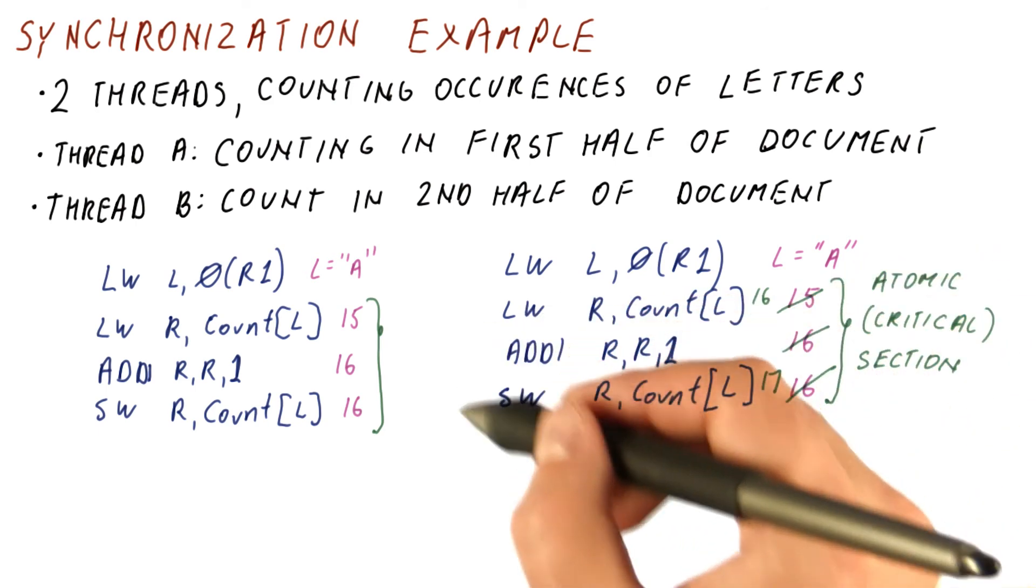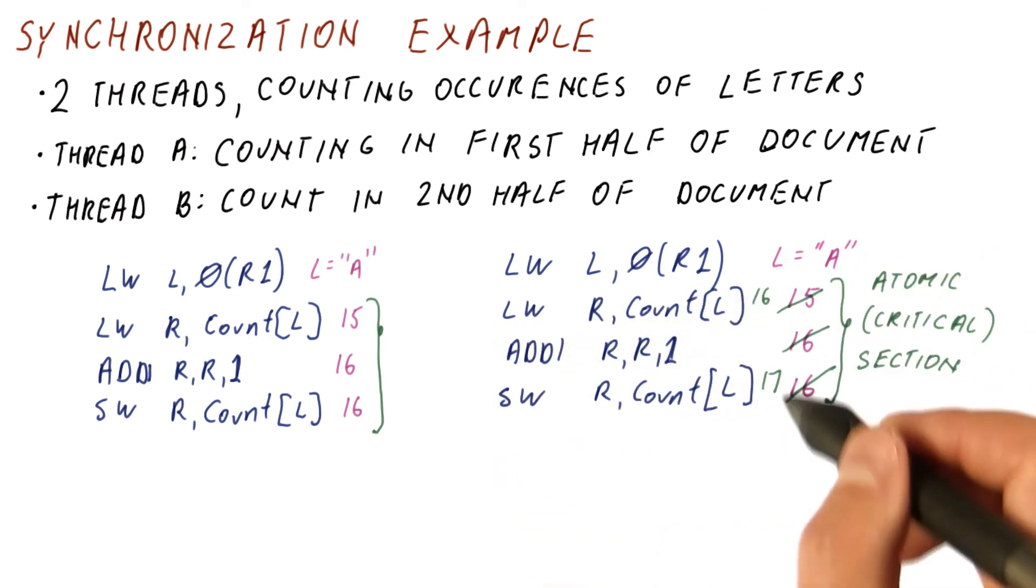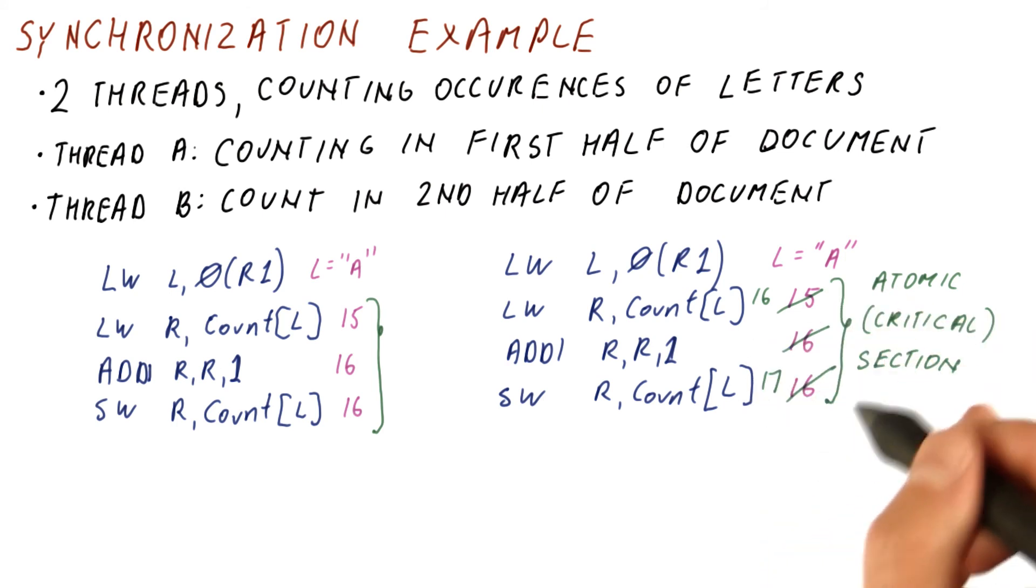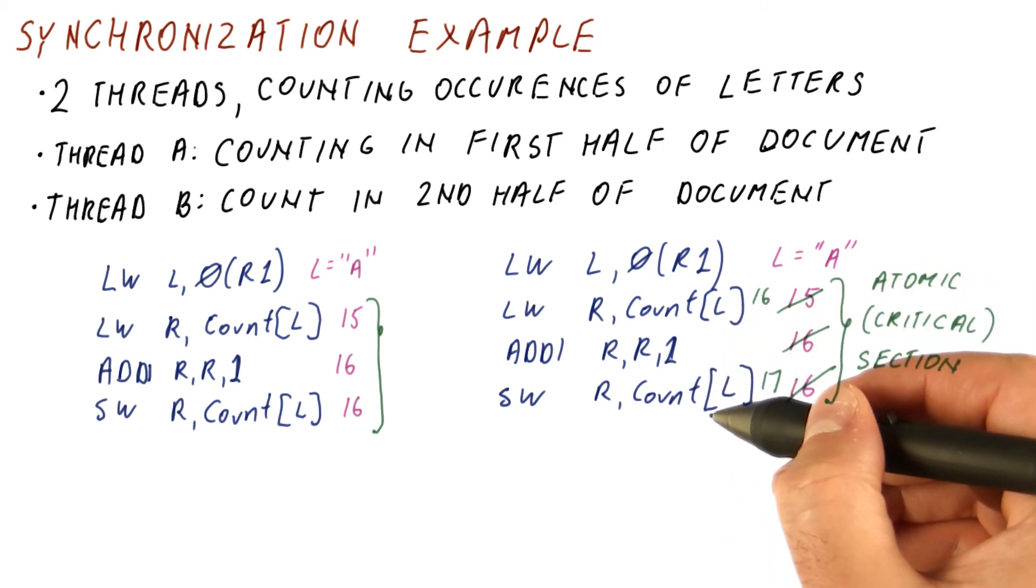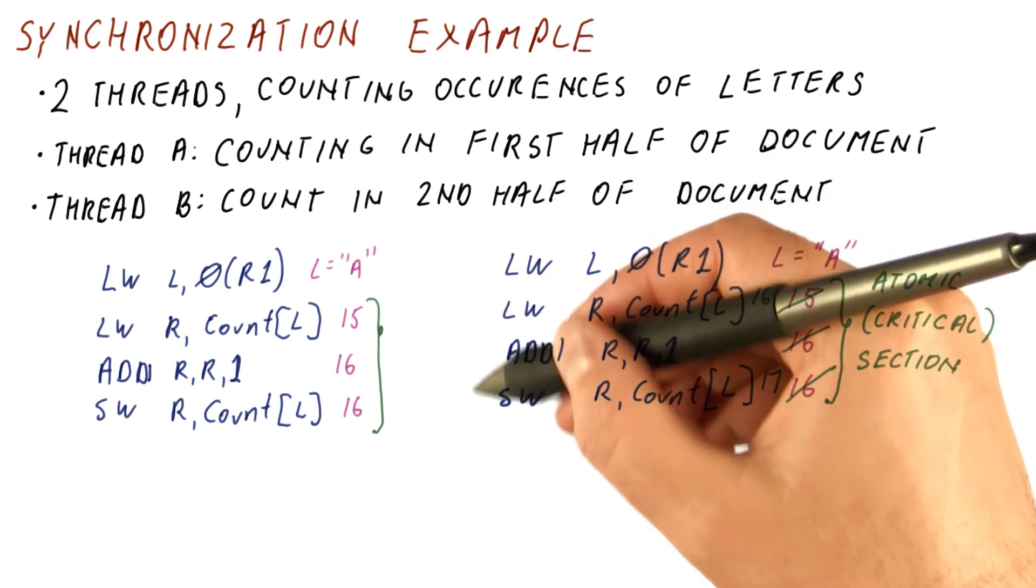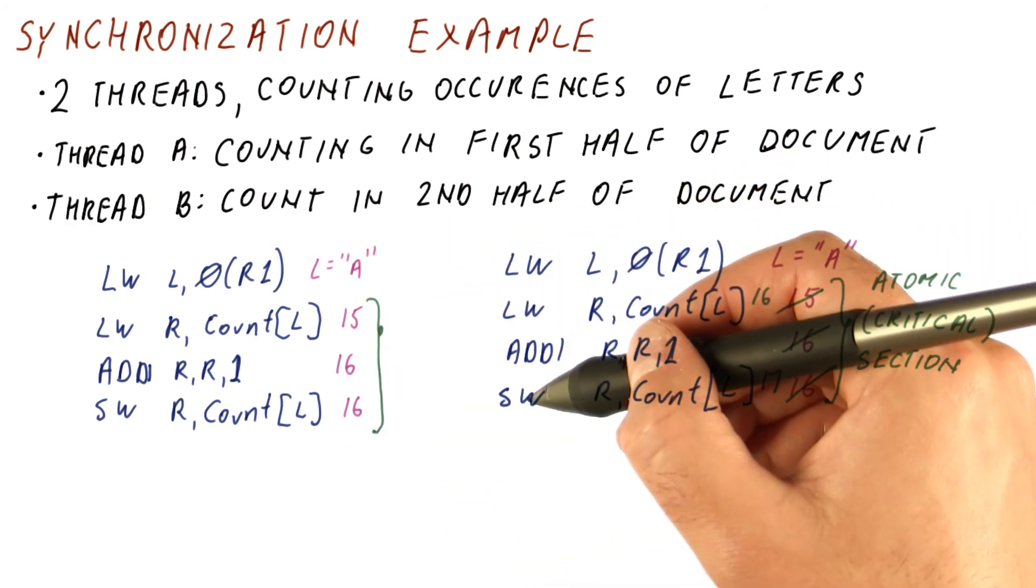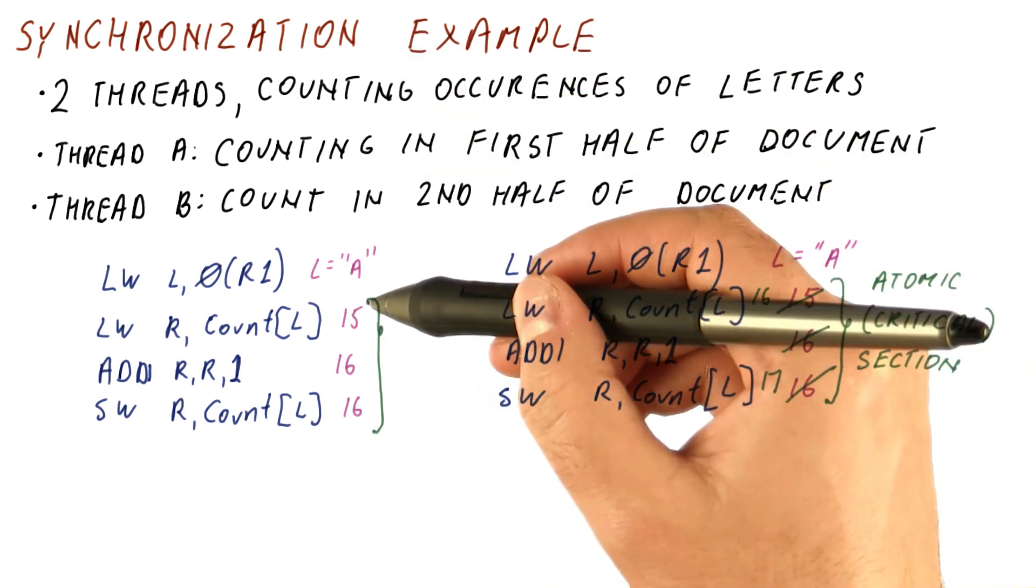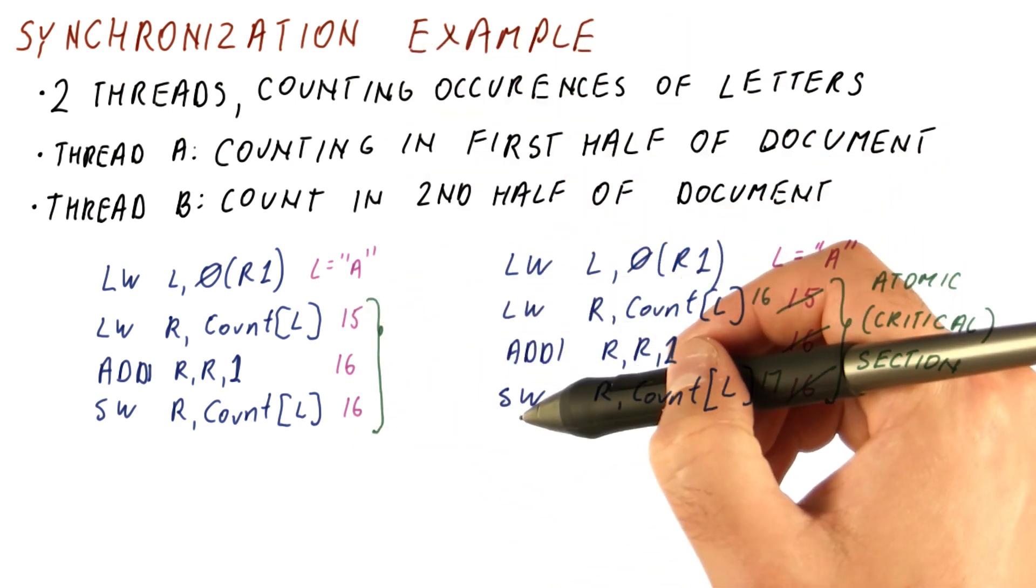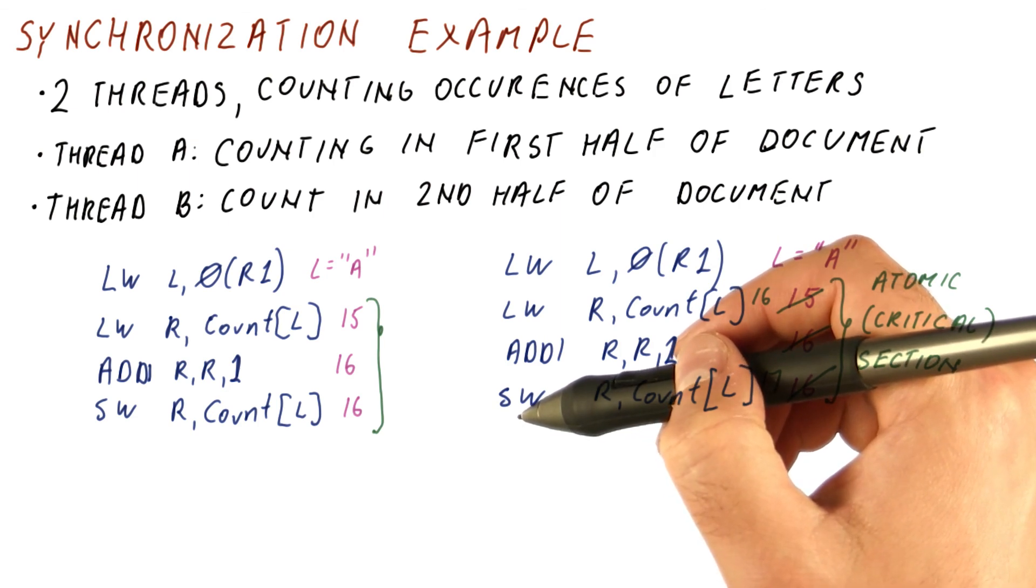But as you can see, if we have a section that should behave as a critical section, meaning we do this without interference from any other thread, if we just let it happen, it's not going to be done correctly. So what we need is synchronization. We need additional code that ensures that only one thread gets to do this at any given time.